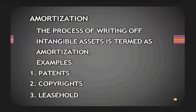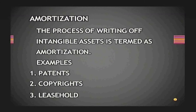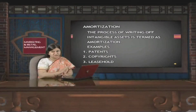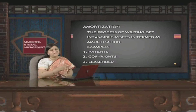Another term is amortization and how it differs from depreciation. The process of writing off an intangible asset is termed amortization. A distinction is made on the basis of the nature of the asset. Tangible assets are those which can be touched and felt, such as plant, machinery, and buildings. Intangible assets are those which cannot be touched or felt but have economic value, such as patents, copyrights, leaseholds, and goodwill.